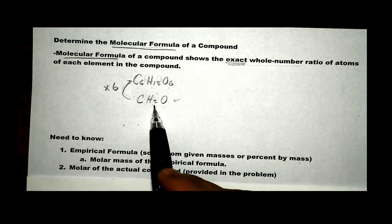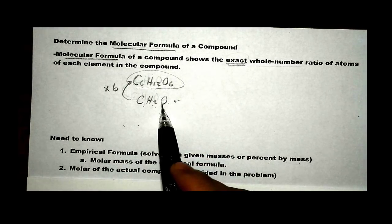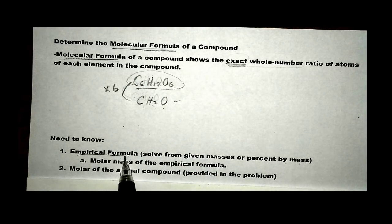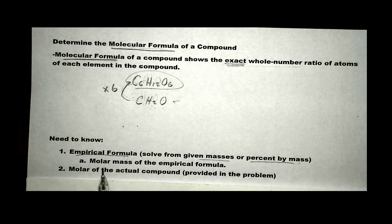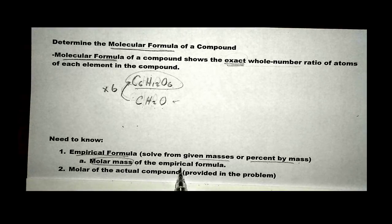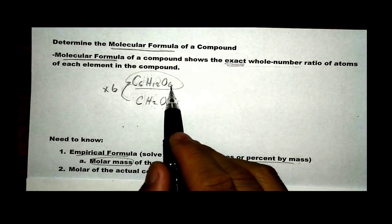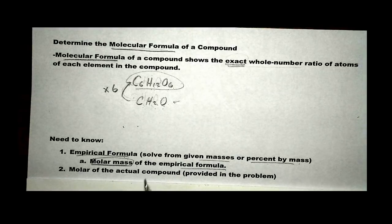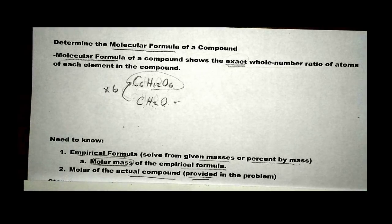Based on the relationship between empirical and molecular formula, we need two pieces of information to solve for the molecular formula. First, we need to know the empirical formula — sometimes it is not given directly, but we may be given the masses or percent by mass of each element. Once we have the empirical formula, we can find its molar mass. The molar mass of the actual compound will always be provided.